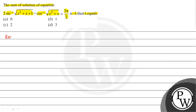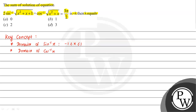The key concept to solve this question is the domain of sin⁻¹(x), which is from minus 1 to 1. Similarly, the domain of cos⁻¹(x) is also from minus 1 to 1. We will use this concept to solve this question.